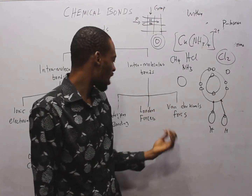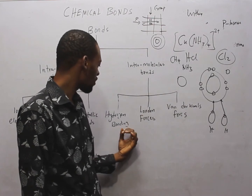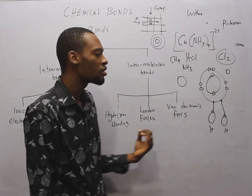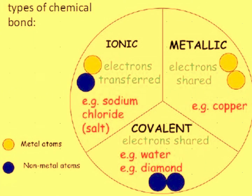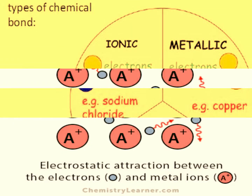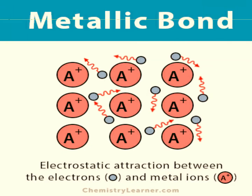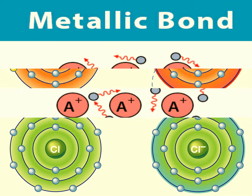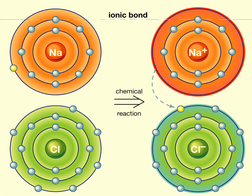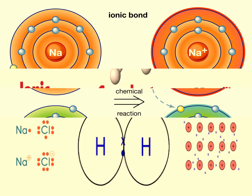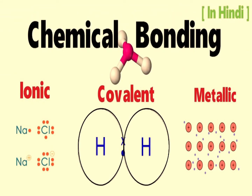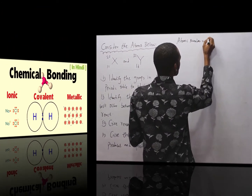Metallic bonds are forces of attraction which hold metal atoms together in a crystal lattice. They are responsible for properties of metals such as malleability, ductility, electrical and thermal conductivity, and high melting and boiling points.